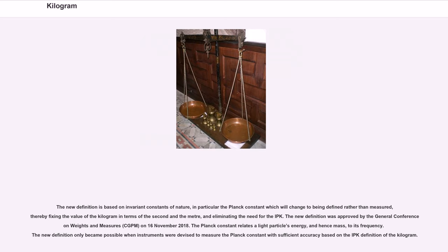The new definition was approved by the General Conference on Weights and Measures, CGPM, on November 16, 2018. The Planck constant relates a light particle's energy, and hence mass, to its frequency. The new definition only became possible when instruments were devised to measure the Planck constant with sufficient accuracy based on the IPK definition of the kilogram.